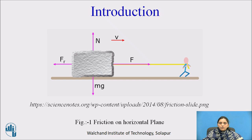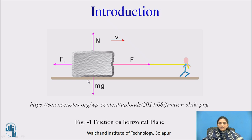A person is trying to move a block with force F on a horizontal plane, so the block tends to move in the direction of force. In the opposite direction of force, the frictional force FR will act. The self-weight of the block is MG acting vertically downward, and the surface offers a support reaction N vertically upward. All forces acting on the block are shown in the figure, illustrating friction on a horizontal plane.